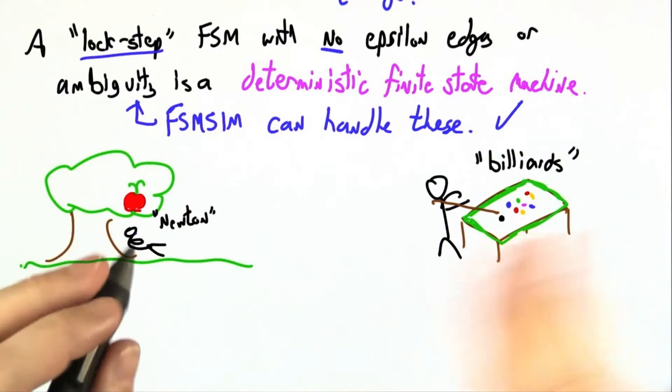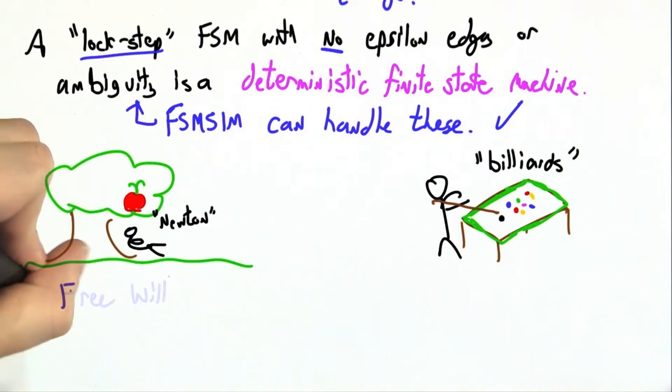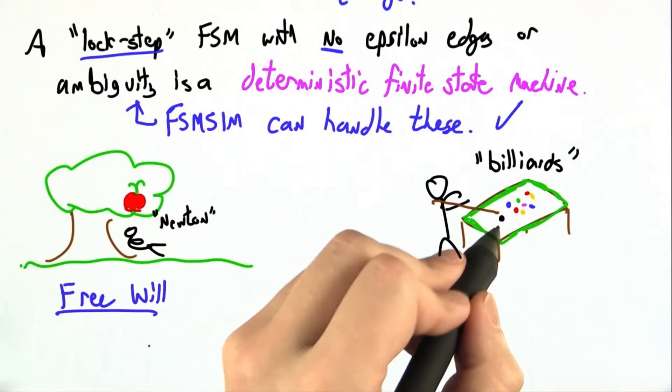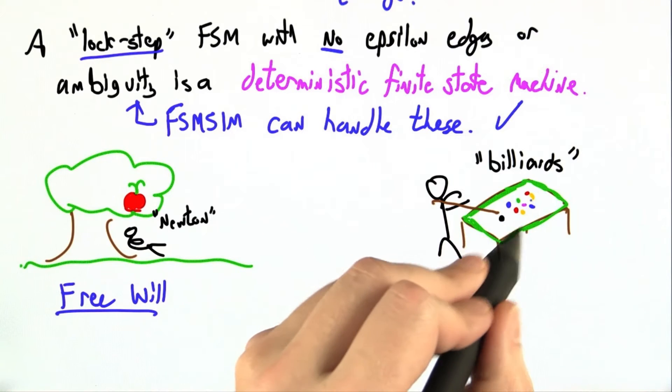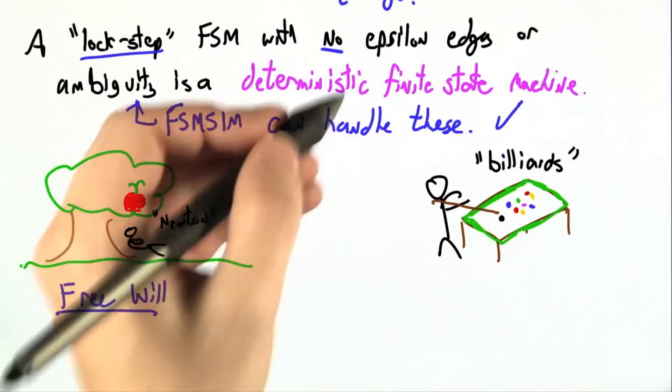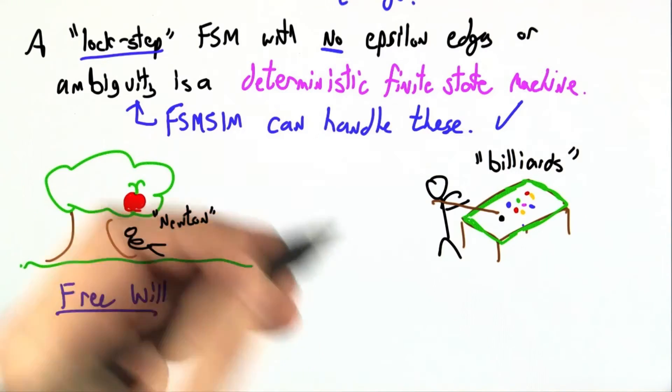As a bit of a fun aside, this notion of determinism or non-determinism can be related to the question of free will in philosophy. Can we actually make independent choices, or is everything preordained by the current state of the world and forces acting on it, like a lockstep game of billiard or snooker or pool?